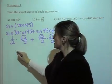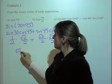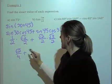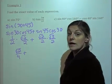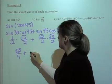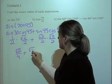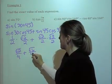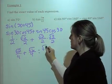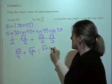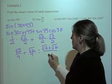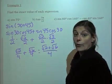We multiply these and we get √2/4. Then we multiply these and we get √6/4. So we get √2 plus √6, all over 4.